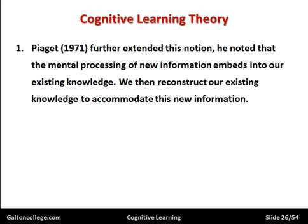Piaget in 1971 extended the notion. He noted that the mental processing of new information embeds into our existing knowledge. So whenever we have a new experience we don't kick out old experiences — we take in the new experience and process it. We look at why it's a new experience and how it fits with our previous experiences. We accommodate this new information.